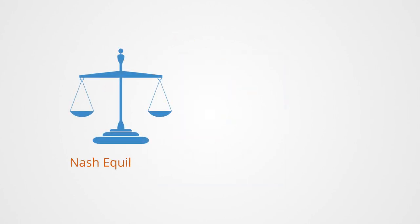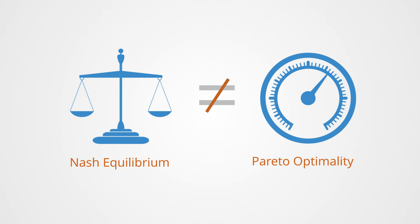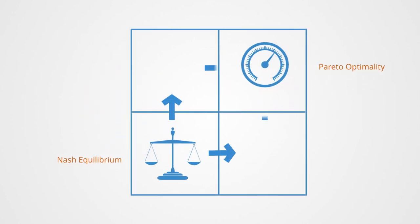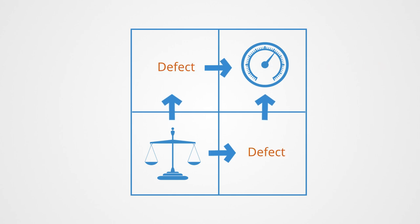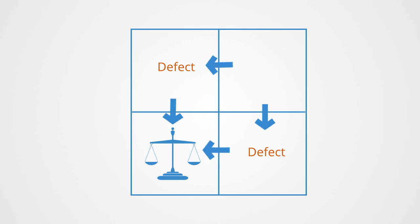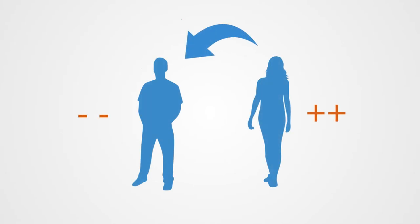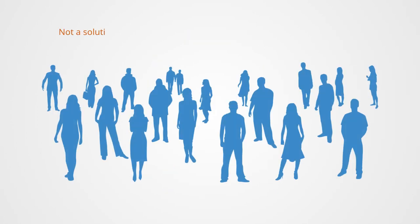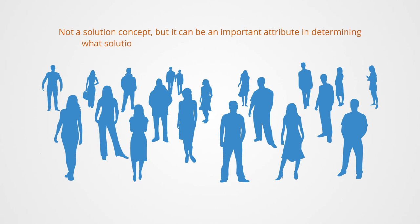One of the features of a Nash equilibrium is that in general it does not correspond to a socially optimal outcome. That is to say, for any given game it is possible for all the players to improve their payoffs by collectively agreeing to choose a strategy different from the Nash equilibrium. The reason for this is that some players may choose to deviate from the agreed-upon cooperative strategy after it has been made, in order to improve their payoff further at the expense of the group. A Pareto optimal equilibrium describes a social optimum in the sense that no individual can improve their payoff without making at least one other player worse off. Pareto optimality is not a solution concept, but it can be an important attribute in determining what solution the players should play or learn to play over time.